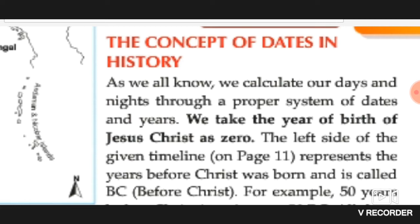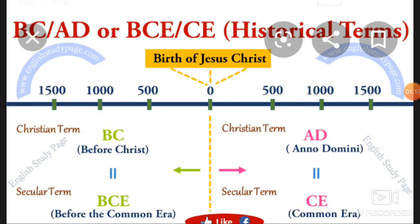And the period after his birth is A.D., meaning Anno Domini. For example, 50 years before Christ is written as 50 BC, and 100 years after the birth of Christ is written as 100 AD.